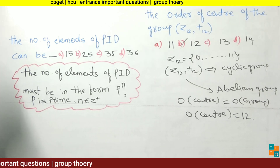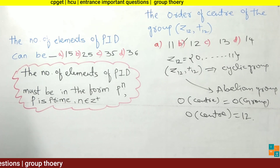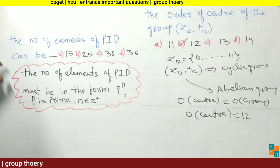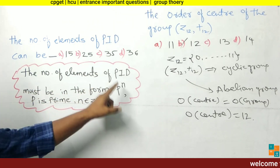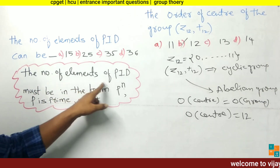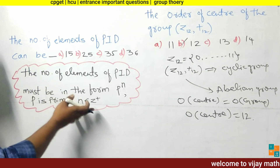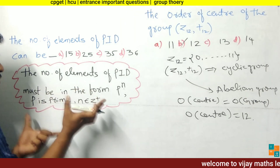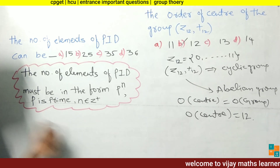Now see the third problem: the number of elements of a principal ideal domain can be which of the following? Options are A: 15, B: 25, C: 35, D: 36. We solve this using the following fundamental: the number of elements of a principal ideal domain must be in the form p^n, where p is prime and n is a positive integer.